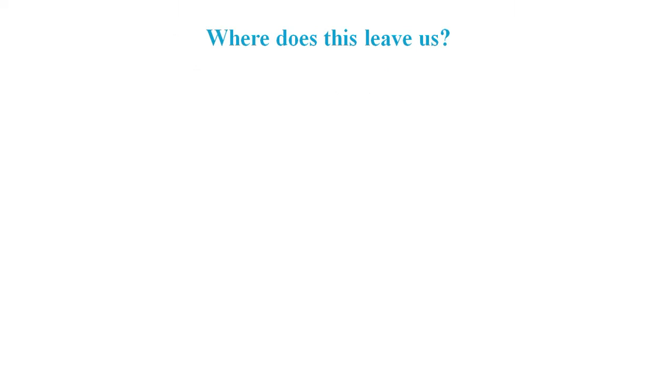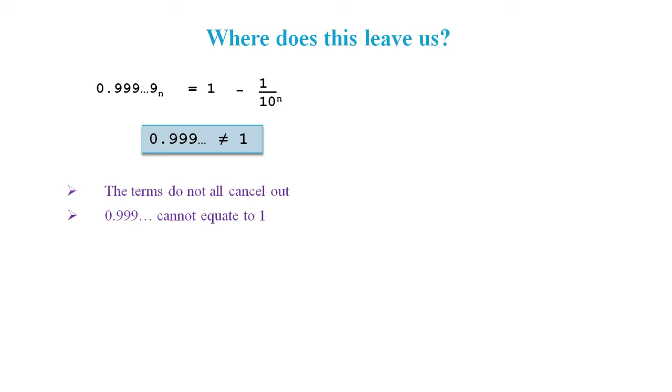So where does this leave us? Our rigorous proof gave this result. In the proof, we showed that the endless terms do not all cancel out, and we showed that for any value of n, 0.9 recurring cannot equate to 1.